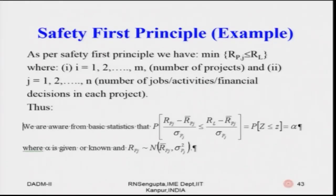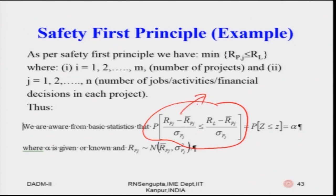As per the safety first principle, the decision is: minimize P(R_p < R_L) for projects j = 1, 2, 3, … M. From basic statistics: Z = (R_p − R̄_p) / σ(R_p), and the small z threshold value alpha can be found from the standard normal table. Rank the decisions from lowest to highest probability — or if considering losses (negative distribution) versus gains (positive distribution), the overall rule remains the same with sign changes accordingly.